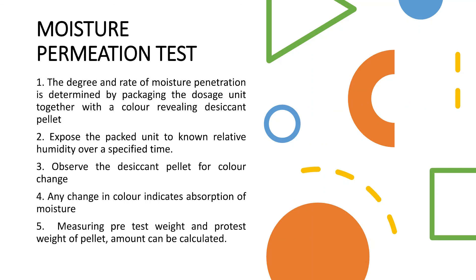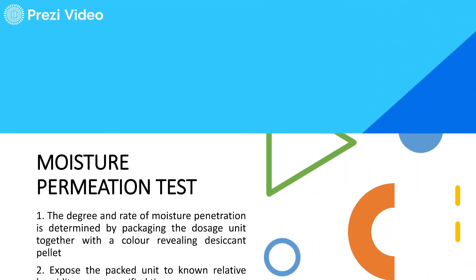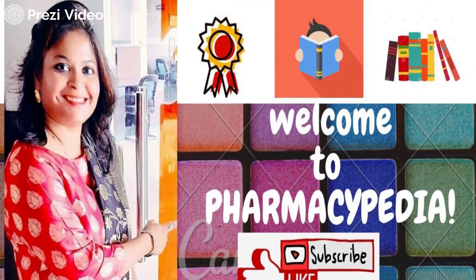By measuring the pre-test weight of the desiccant pellet and comparing it with the post-test weight, the amount of moisture absorbed or lost can be calculated. If a substance absorbs moisture it gains weight; if it loses moisture it loses weight. The change in weight indicates the moisture permeation tendency of the soft gelatin capsules.